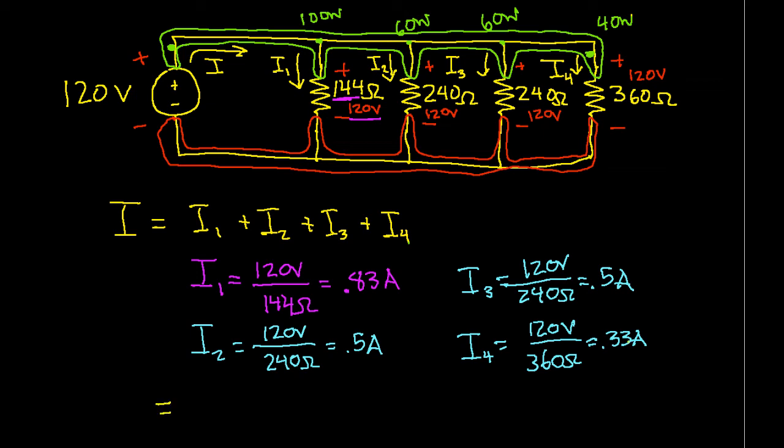So if I plug all these numbers in and solve for I, I get that I is equal to 0.83 amps from I1 plus 0.5 amps plus 0.5 amps plus 0.33 amps, which is 2.16 amps. So what this says is that the voltage source, in order to keep 120 volts across each of the light bulbs, will have to put out a total of 2.16 amps.